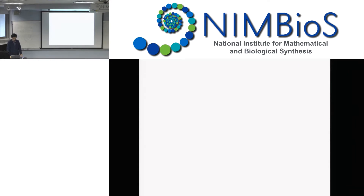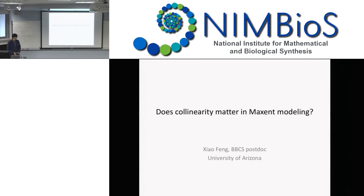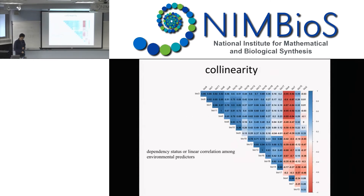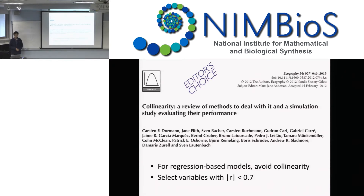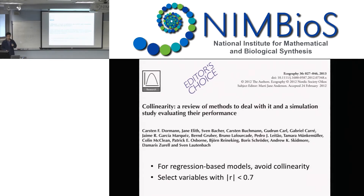Moving on to the next topic — something done with colleagues from Oklahoma and Arizona. The question is: does collinearity matter in MaxEnt? Collinearity is the dependence status among those predictors — a bunch of them are all highly correlated at the same time. There is a recent famous review paper on collinearity, and to summarize: for regression-based models, we should avoid collinearity. They propose a threshold — a simple way is to remove variables that have a high correlation coefficient.